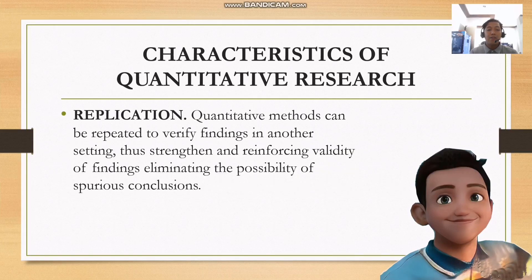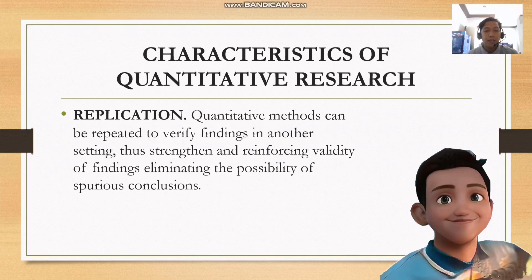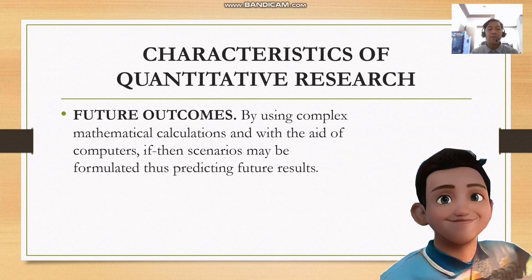The next one is replication. Quantitative research methods can be replicated or repeated to verify findings in another setting, thus strengthening and reinforcing the validity of findings and eliminating the possibility of spurious conclusions. And lastly, we have future outcomes. By using complex mathematical calculations and with the aid of computers, if-then scenarios may be formulated, thus predicting future results. Quantitative research puts emphasis on proof rather than discoveries.